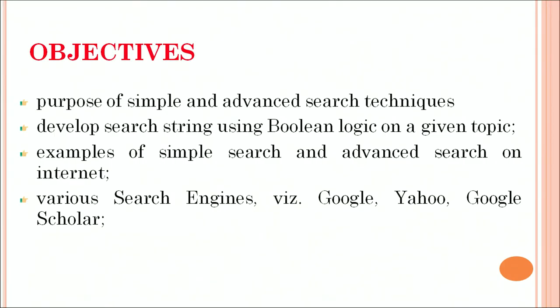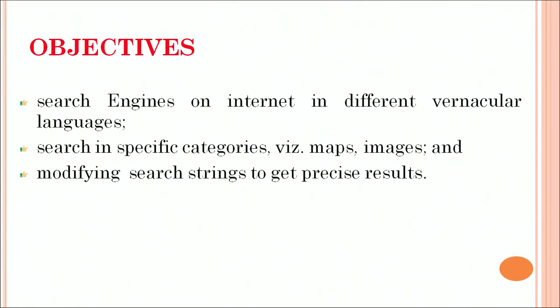The first objective is how we will be able to search through simple and advanced search techniques. Then how we will develop the search strings using Boolean logic on a given topic, and give examples for the simple search and the advanced search on the internet. We will tell you about various search engines like Google, Yahoo, Google Scholar, and search engines in different vernacular languages. Also, specific search in specific categories like maps, images and many more, and how we can modify search strings to get precise results.